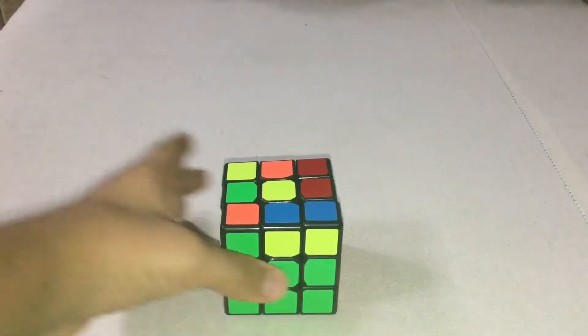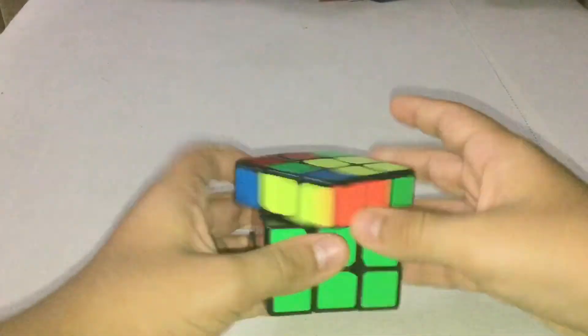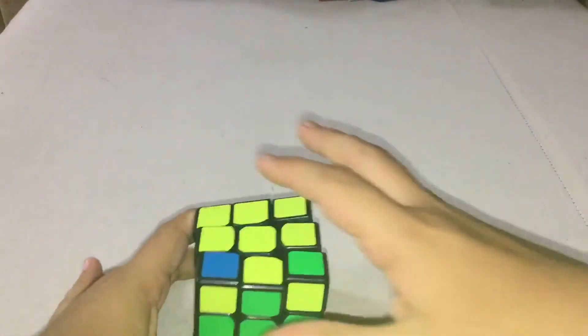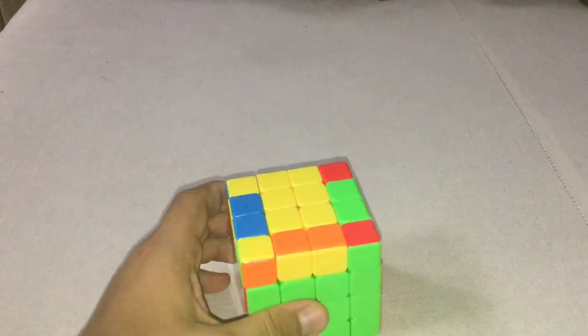Like on a 3x3 you can only have none of the edges, two of the edges, or all of the edges solved - one, two, three, four. But on a 4x4, parity is when you either have just one of the edges solved or three of the edges.